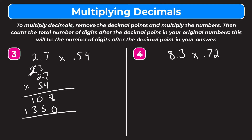Now we add these down: 8, 0 plus 5 is 5, 1 plus 3 is 4, and the 1. Now in order to find out where the decimal point goes in our answer, we count how many digits there are in total to the right of the decimal point in our original numbers. We have 1 here in 2 and 7 tenths and 2 in 54 hundredths, giving us a total of 3. So in our answer we have to have 3 digits to the right of the decimal point, and our final answer would be 1 and 458 thousandths.